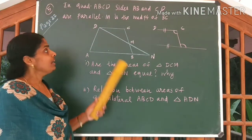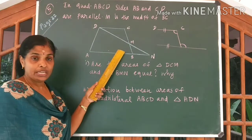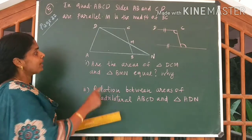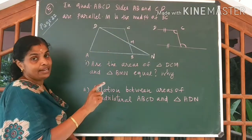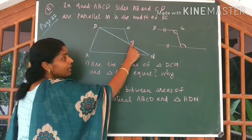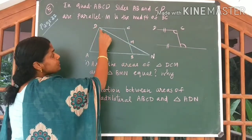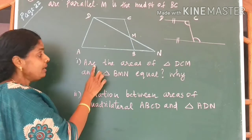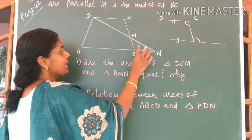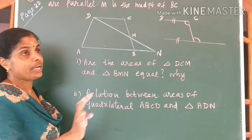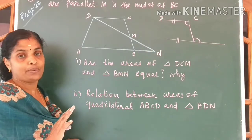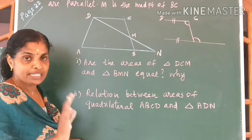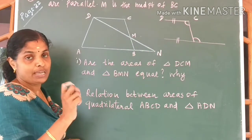Come to the third question, children. It is the fifth question on the same page — a very important question for your exam also. You read the question from the textbook. You are given AB and CD to be parallel lines. Also, M is the midpoint. These two lines are extended — DM and AB are extended to meet at N. Come to the first question: are the areas of triangle DCM and DMN equal? We have to check this. Since we just studied that equal triangles have equal areas, let us first prove these two triangles to be equal triangles.